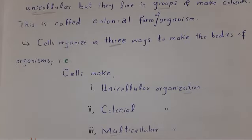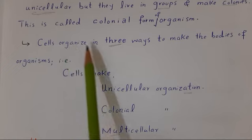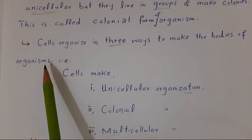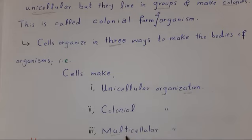Our topic is cellular organization. What is cellular organization? It means how the cells organize or arrange to make the bodies of living organisms. In living organisms, the cells organize in three ways: cells make unicellular organization, colonial organization, and multicellular organization.